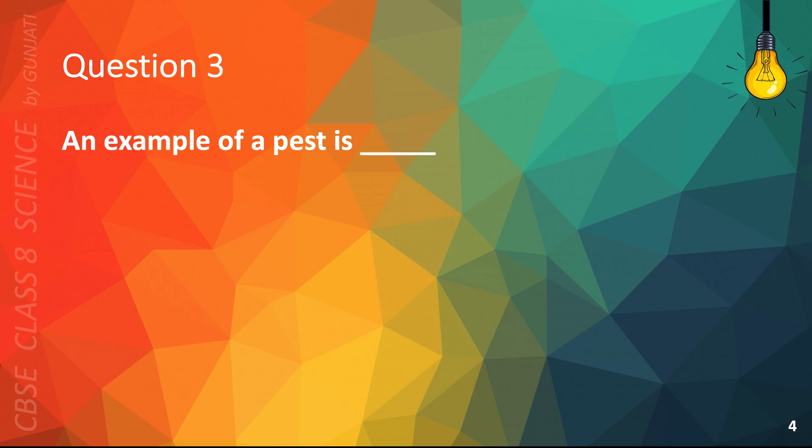Question 3. An example of a pest is... A. Rat, B. Cow, C. Crow, or D. Bull. The correct answer is A. Rat.